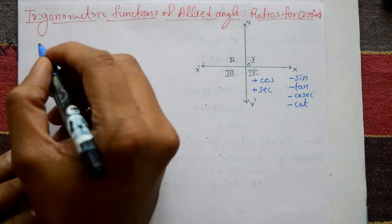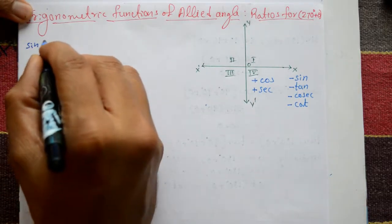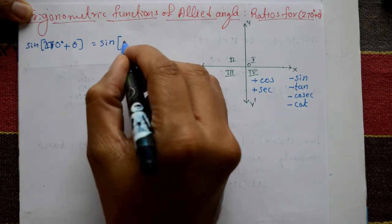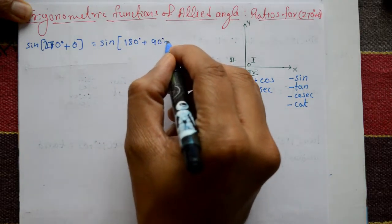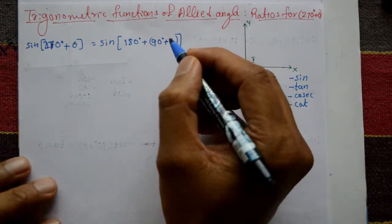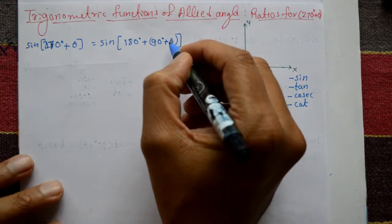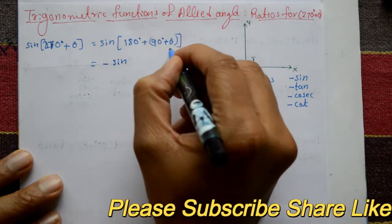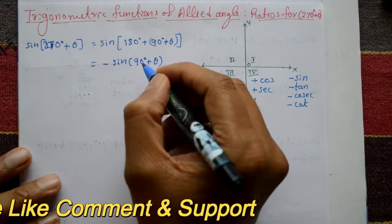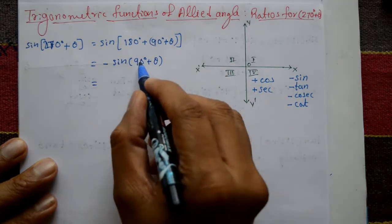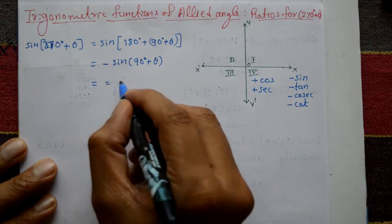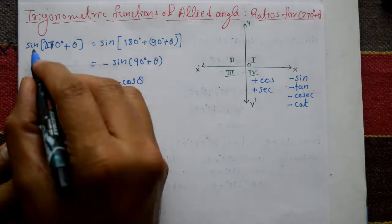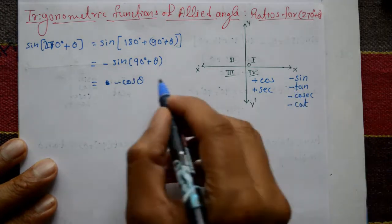Let us find sine of 270 degrees plus theta. We can write 270 degrees as 180 degrees plus 90 degrees. So sine of 270 degrees plus theta becomes sine of 180 plus (90 degrees plus theta). Now sine of 180 plus theta equals minus sine of theta, so we get minus sine of (90 degrees plus theta). Since sine of 90 plus theta equals cos theta, we get sine of 270 degrees plus theta equals minus cos theta. Sine is negative, which confirms the fourth quadrant.